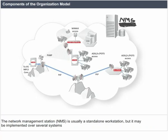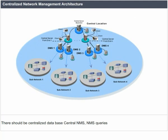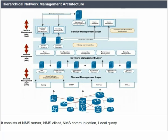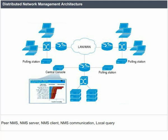Components of the organizational model include the network management station (NMS), which is usually a standalone workstation but may be implemented over several systems. Centralized network management architecture requires a centralized database, a central NMS, and NMS queries. Hierarchical network management architecture consists of an NMS server, NMS client, NMS communication, and local query. Distributed network management architecture similarly includes a pure NMS, NMS server, NMS client, NMS communication, and local query.